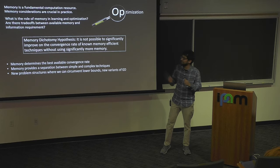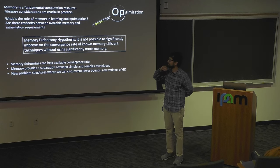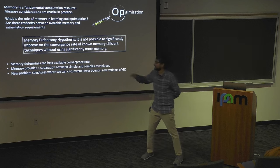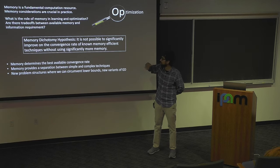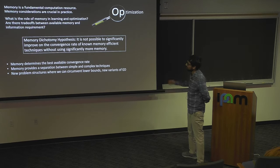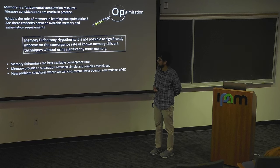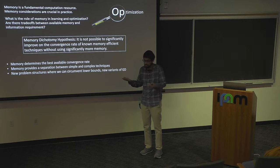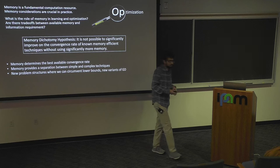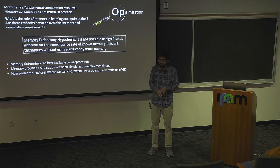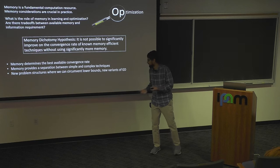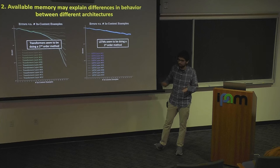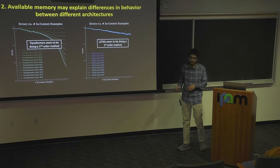To summarize: we talked about how memory can be a fundamental computational resource and how memory considerations can be crucial in practice. We wanted to understand the role of memory in learning and optimization and see if there are trade-offs. We saw instantiations suggesting it may not be possible to significantly improve on the convergence rate of known memory-efficient techniques without using much more memory — for a first-order setting or a stochastic setting. Memory may determine the best convergence rate achievable and allows us to prove unconditional separations between simple and complex techniques. We also suggest new problem structures where we can circumvent some of these lower bounds.